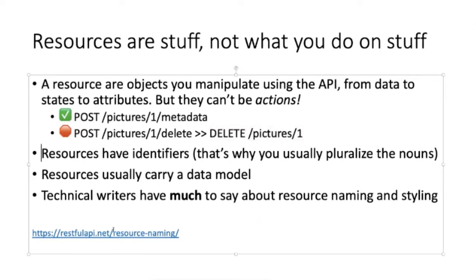Resources have identifiers — a number so you can tell which resource is which. Most REST APIs use pluralized nouns for resources, like 'pictures' instead of 'picture.' Resources usually have a data model associated with them, such as a file name and media type for pictures. Resource naming is one of those areas where technical writers have a lot to say, including things like naming conventions, styling choices such as camel case or snake case.